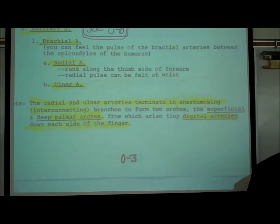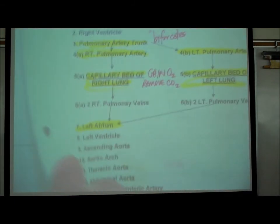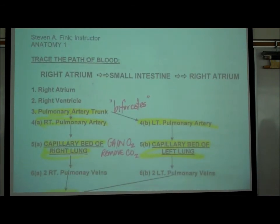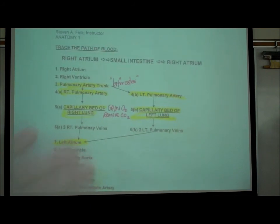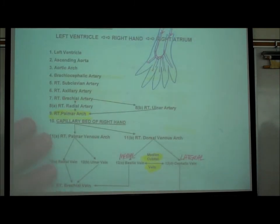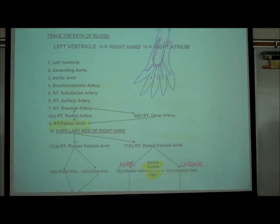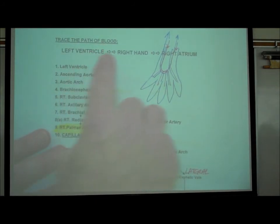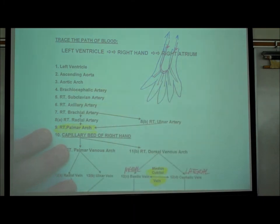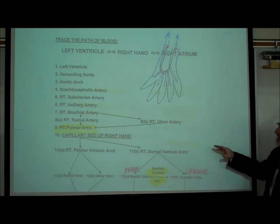On the one-page handout — both sides to be memorized — looking at side 2, it says: trace the path of blood from the left ventricle to the right hand back to the right atrium. Let's follow this. This is like a map quest — directions from point A to point B.